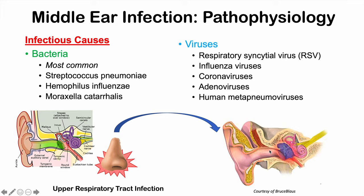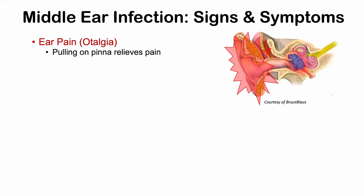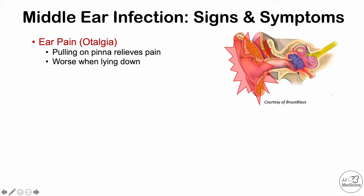What are some of the signs and symptoms of a middle ear infection? By far the most important symptom is ear pain or otalgia. Because we see this in children most often, the child often pulls on their pinna — the ear flap. Pulling down on the ear flap helps relieve some of their pain because it relieves some of the pressure on the tympanic membrane.